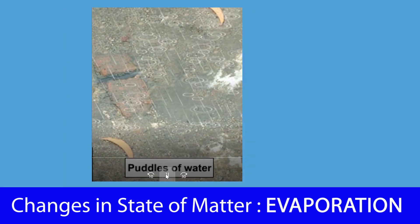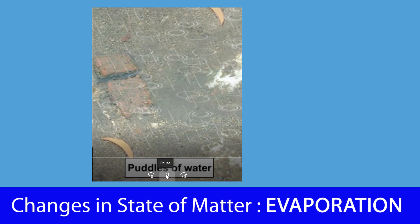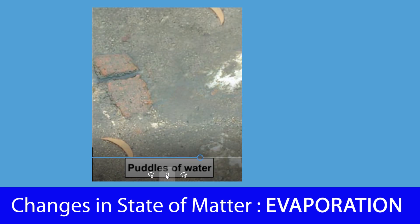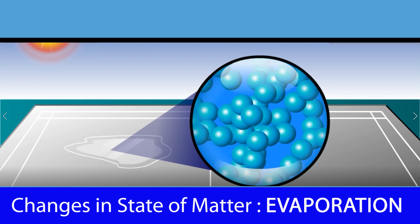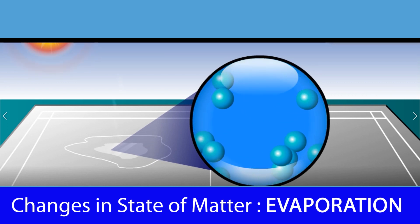Look at the puddles of water — we always see puddles of water after the rain, and these puddles disappear after a few hours in the sun. Where does the water go? The puddles disappear because water particles absorb heat energy from the sun. The particles obtain energy and move faster and more randomly.